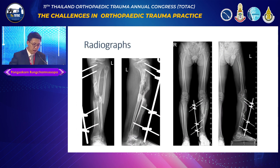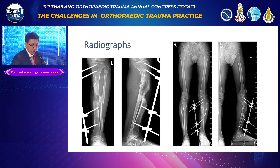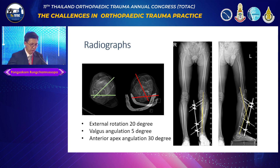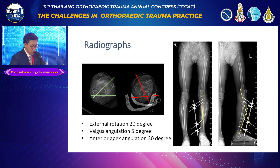Pre-operative X-ray shows malunion fracture of the left tibia with synostosis of the tibia to the fibula. The shortening of the left lower extremity is around four centimeters on orthoroentgenogram. We investigated the malalignment and found external rotation of the left lower extremity around 20 degrees, valgus angulation around 5 degrees, and anterior angulation around 30 degrees.